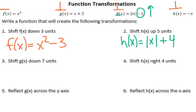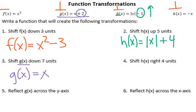Number three: shift g of x down seven units. G of x equals x, and it's already got a plus two. So if we subtracted seven from that, it would be minus five overall to move it down.